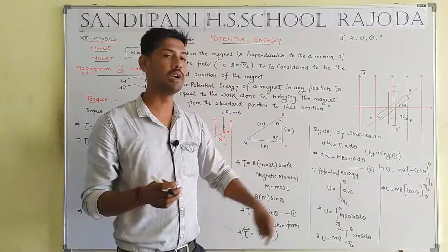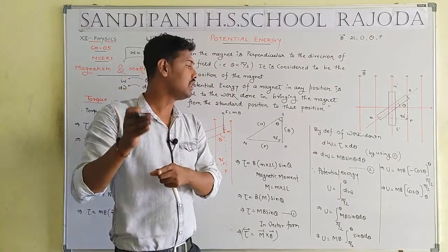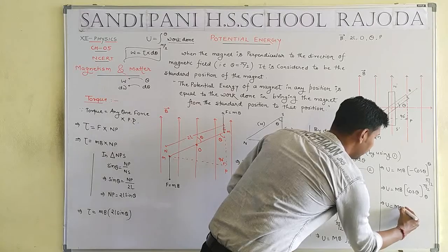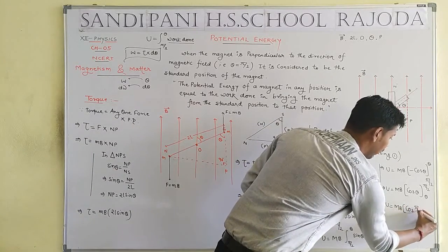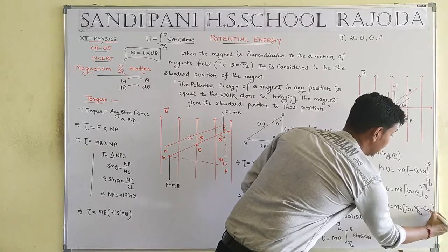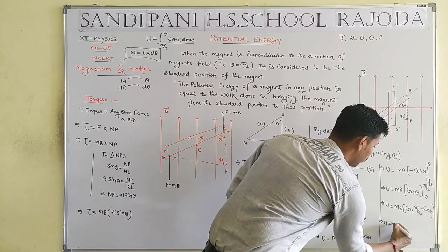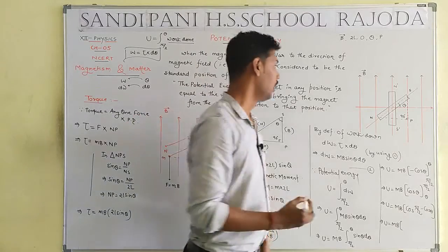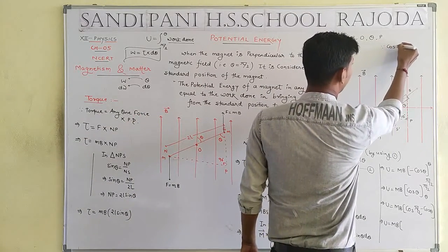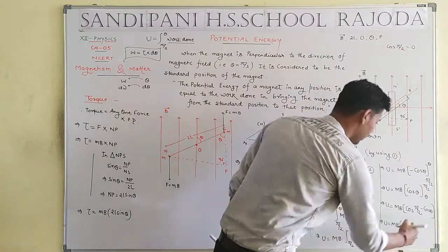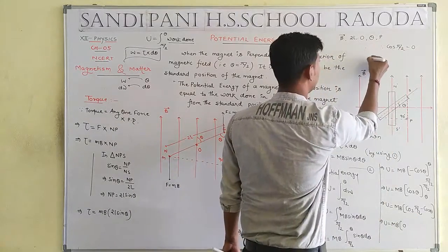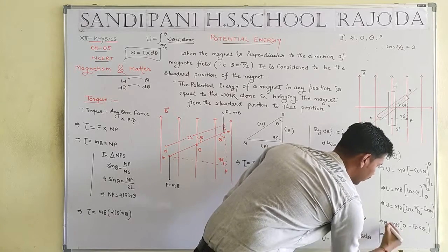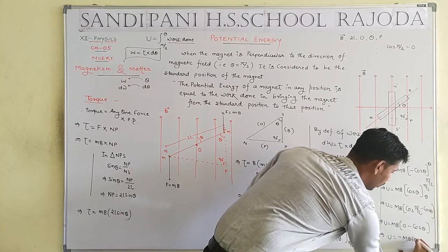So finally we get U equals MB times minus cos theta, with limit from pi/2 to theta. Applying upper limit minus lower limit: cos(pi/2) minus cos theta. Cos(pi/2) means cos 90, which equals 0. So we get 0 minus cos theta. Therefore, finally we get U equals minus MB cos theta.